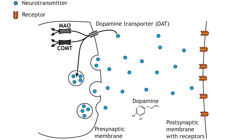Dopamine action is terminated by reuptake into the presynaptic terminal via the dopamine transporter. Once inside the cell, dopamine is either degraded via the actions of monoamine oxidase (MAO) or catechol-O-methyltransferase (COMT), or it is repackaged into vesicles.